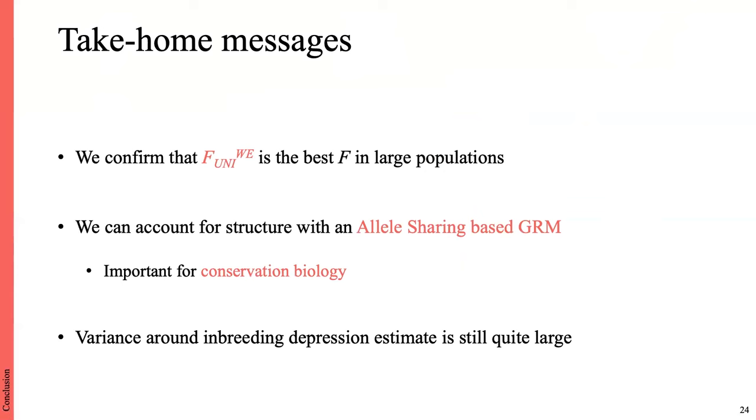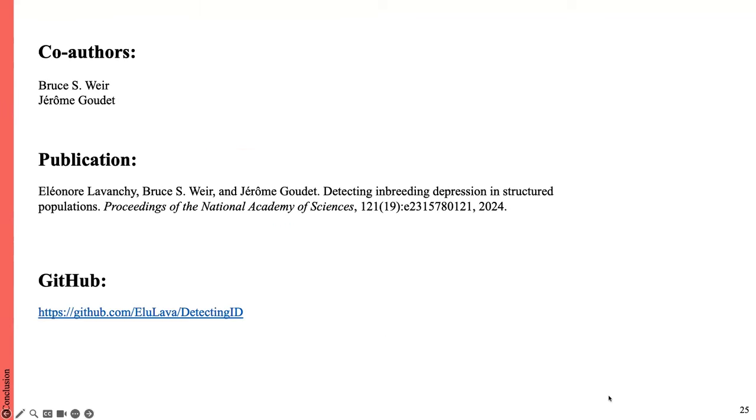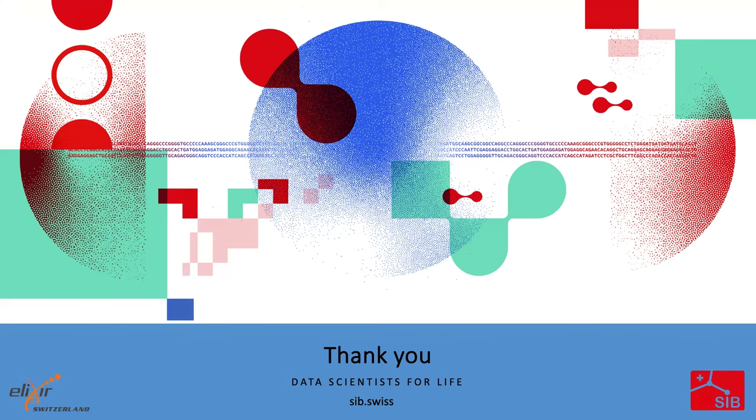To conclude, we confirmed that the weighted version of FUNI is the best inbreeding coefficient for estimating inbreeding depression in large populations. But most importantly, we show that we can account for structure if we include a specific GRM in the model. This is particularly important for conservation biology, as I said before, and for any biologist who wants to assess the effect of inbreeding in isolated, structured, or highly related populations. I just quickly want to stress that we know that the variance around the estimation of B is still very large, even with our method. So it's not perfect, but it's still much better than what was done until now. I want to quickly thank the co-authors, of course, and here is any information that you might want to know about our paper. Thank you for your attention, and I hope that this presentation made you want to read our paper.